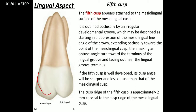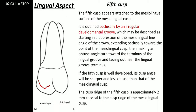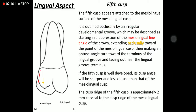The fifth cusp is seen on the mesolingual cusp, more towards the mesial side. It appears as an irregular developmental groove that starts at the mesolingual line angle where there is a depression, then moves occlusally, then takes a sharp turn forming an obtuse angle, and terminates somewhere near the lingual groove.